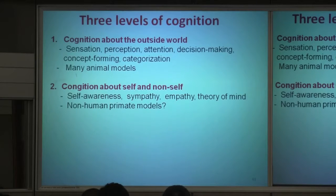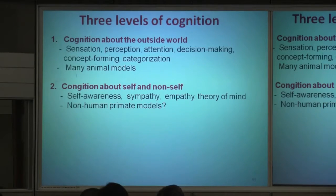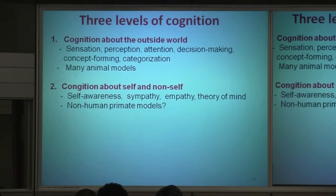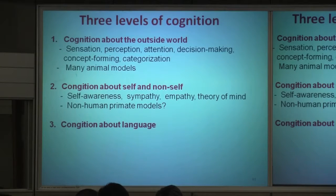Who has self and non-self cognition? Non-human primates may have some. Some non-human primates may serve as a model system. But below the primate level, there is no model for this so far. This is very important because it is an important transition to the human-specific function of language — for language to be recognized, you need to have cognition of self and non-self.